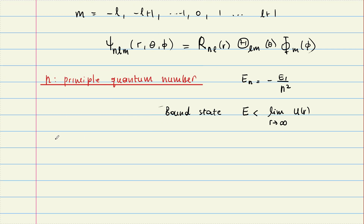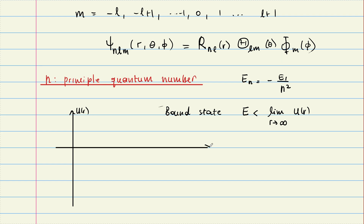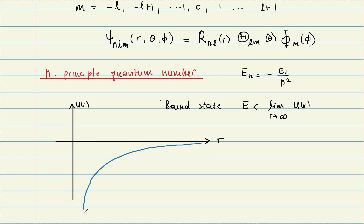We can see how this applies to our problem, which is the Coulomb potential. Here is u of r versus r. At r equals infinity we are at 0, and as r goes to 0, this is going to blow up with 1 over r.